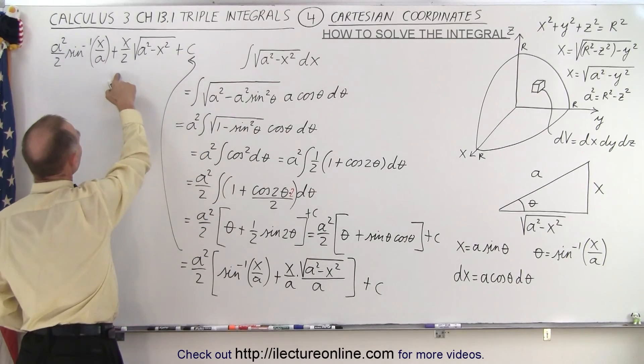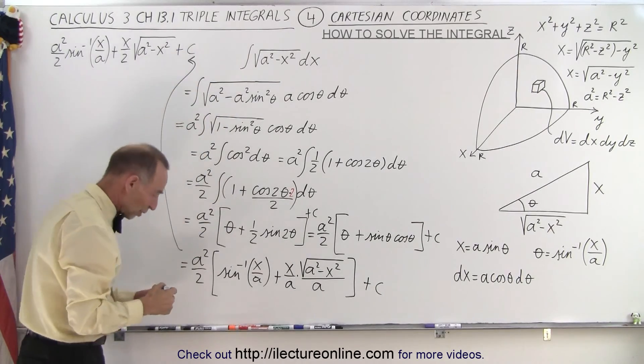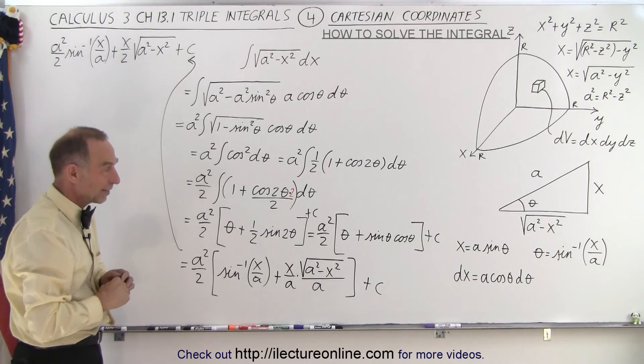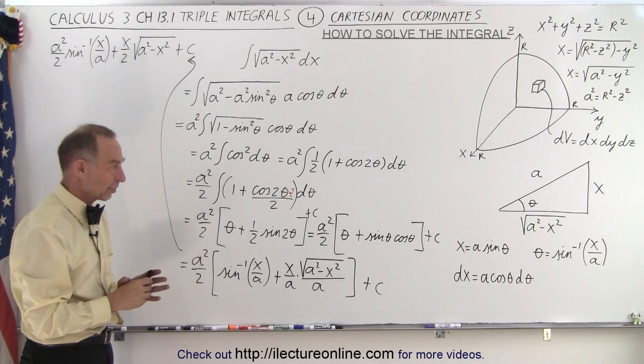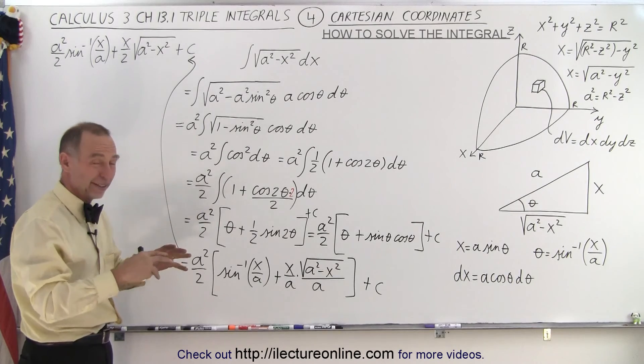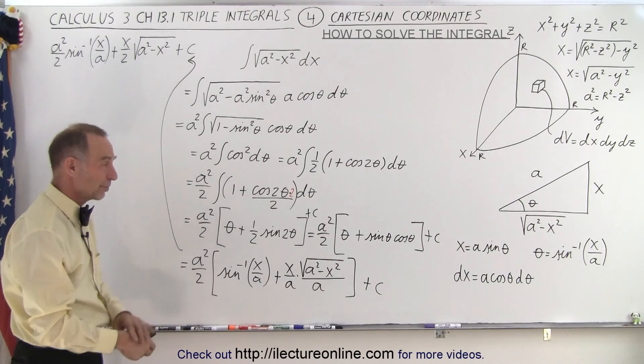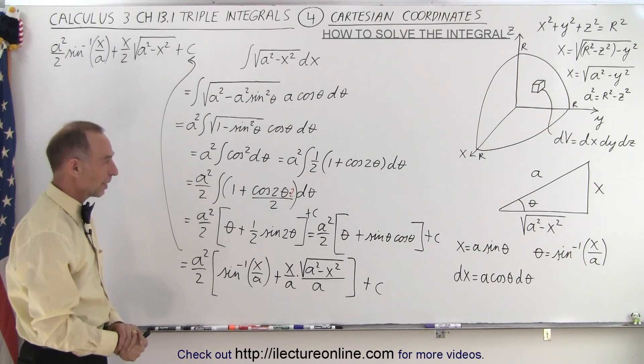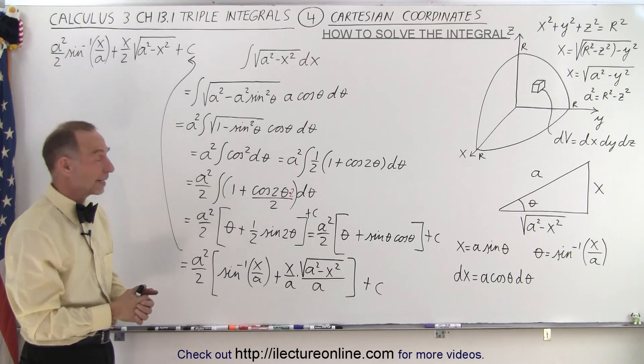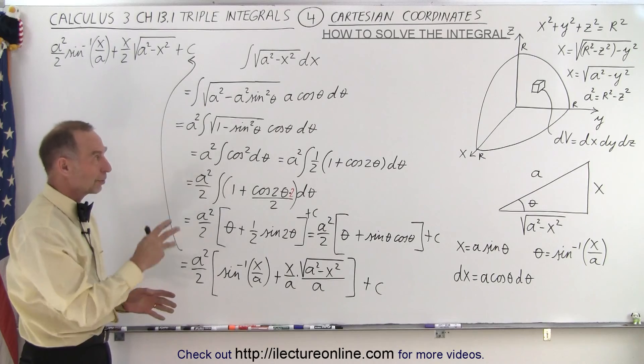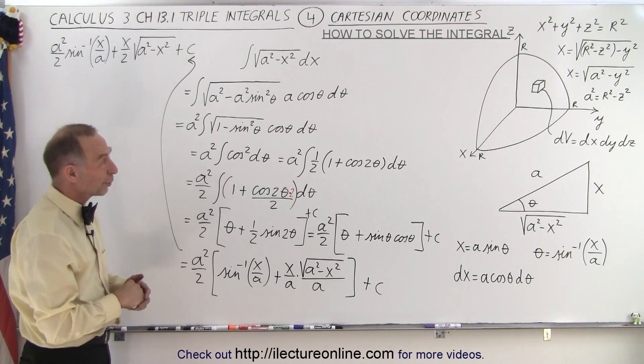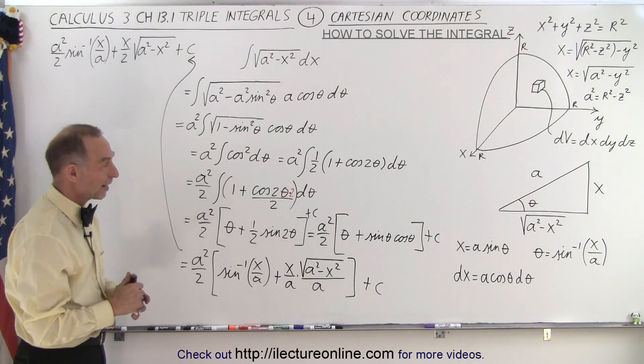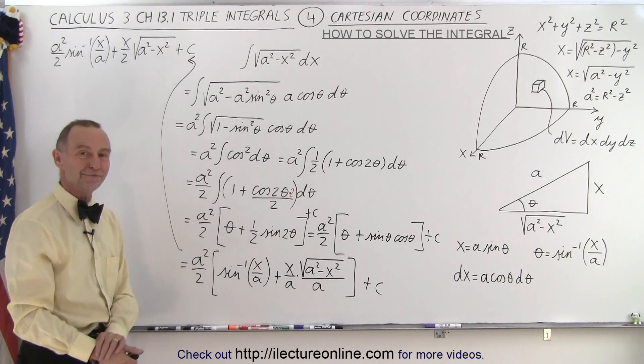And that would then be the result of that original integral. So again, you can see it's a lot of work. If we were to use Cartesian coordinates to solve the volume of a spherical object, you may end up with some very difficult integrations, at least it takes you a long time to get it. And it's probably much better to use either spherical or cylindrical coordinates to find the volume of that. But that is how it's done.